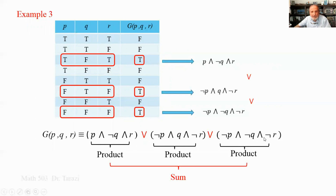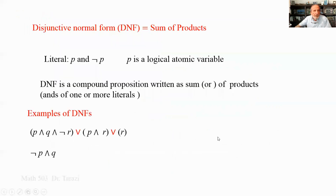Putting OR between those products gives a function that satisfies all those values — that is sum of products, where each AND-connected term is a product and the OR connecting them is the sum. Formally, DNF (Disjunctive Normal Form) is a compound proposition written as a sum (OR) of products (AND) of one or more literals, where a literal is P or NOT P and P is a logical atomic variable.